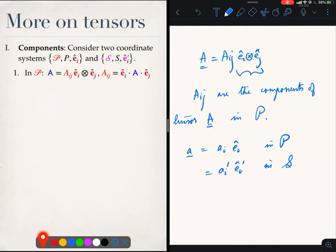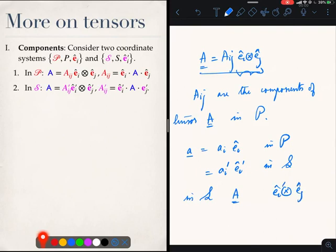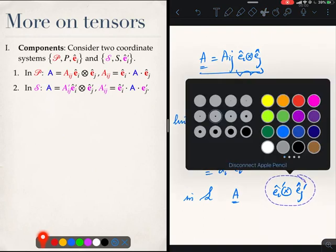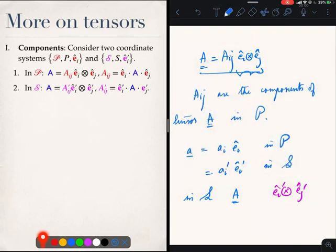What happens to the components of the tensor A? Well in S, we can write A as a linear combination over the basis in S.